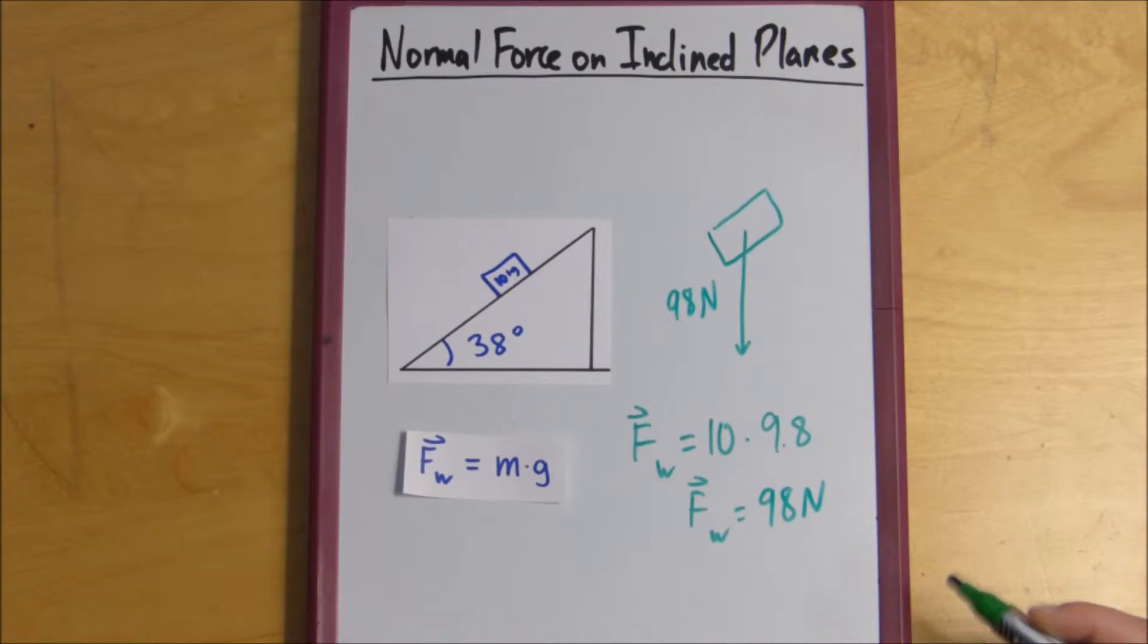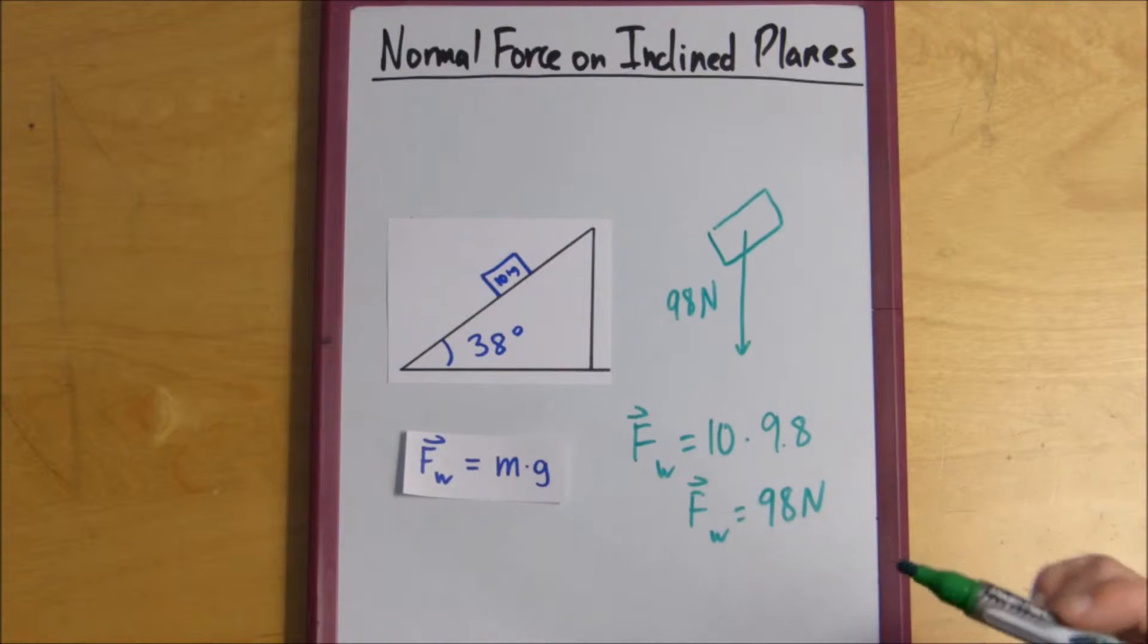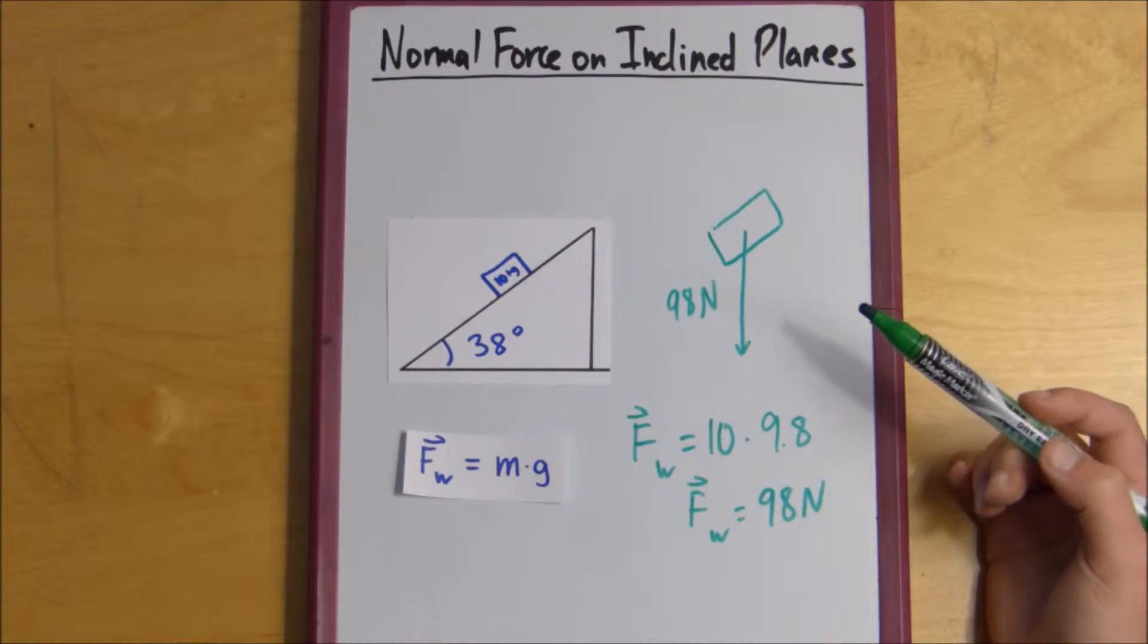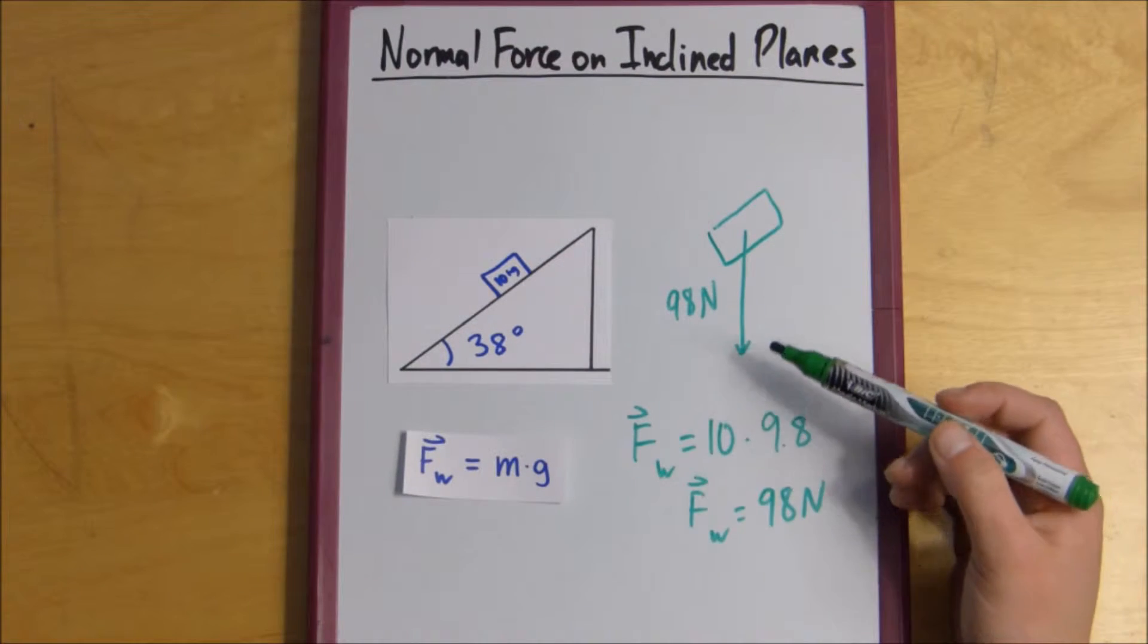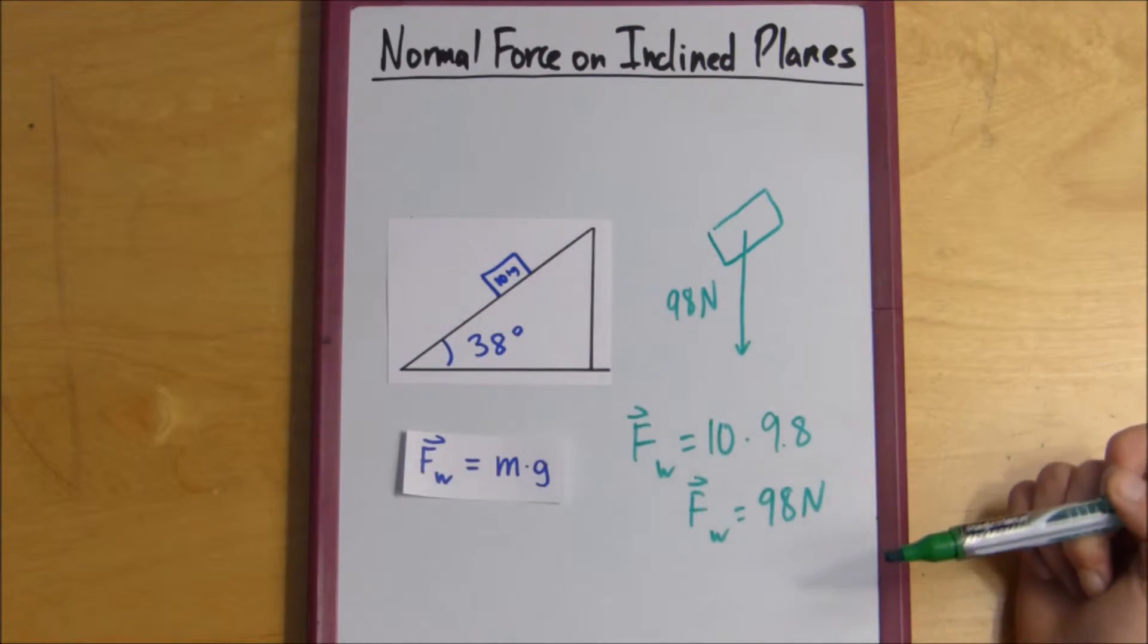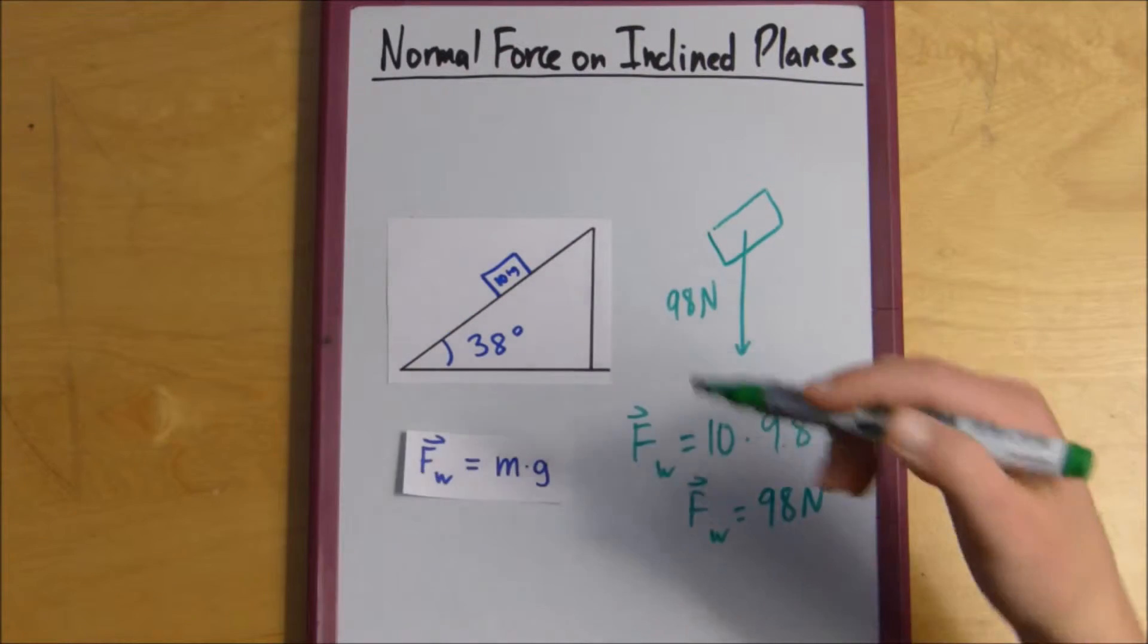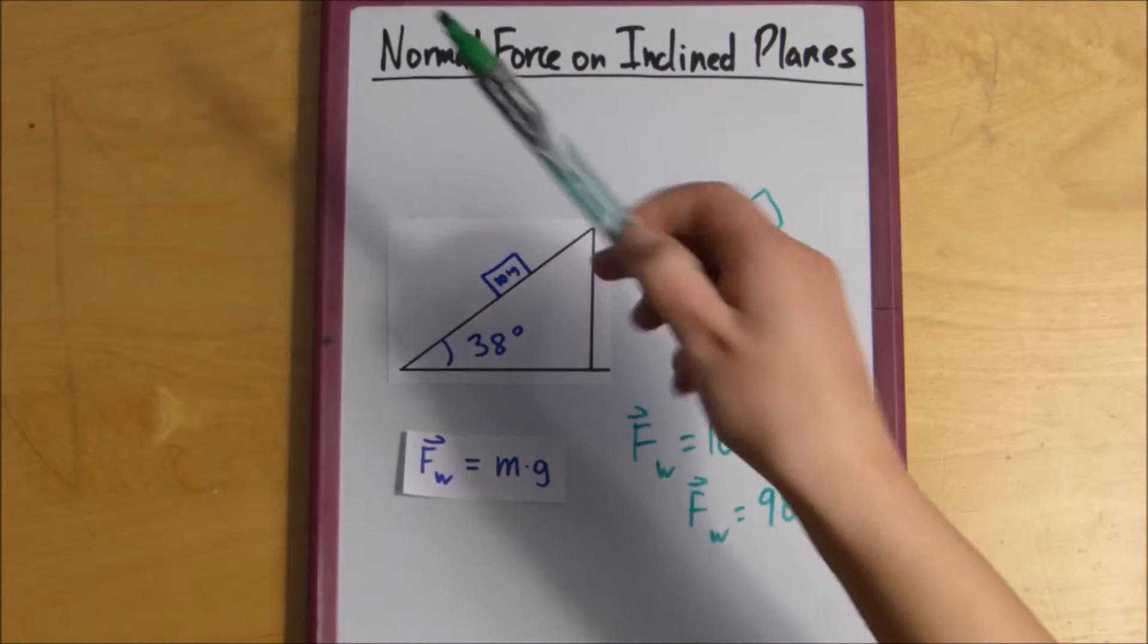And then when we want to label our normal force, we know that the normal force is perpendicular to whatever surface it's on. So in most problems where the box is just on a flat ground, it's pointing up, opposing the weight force. But in this example, our surface is inclined.